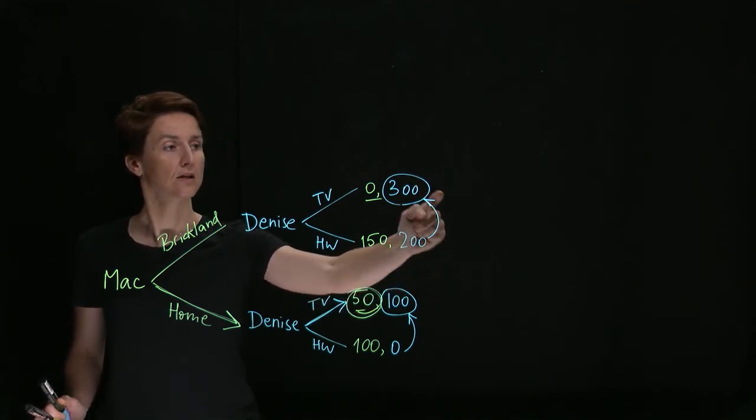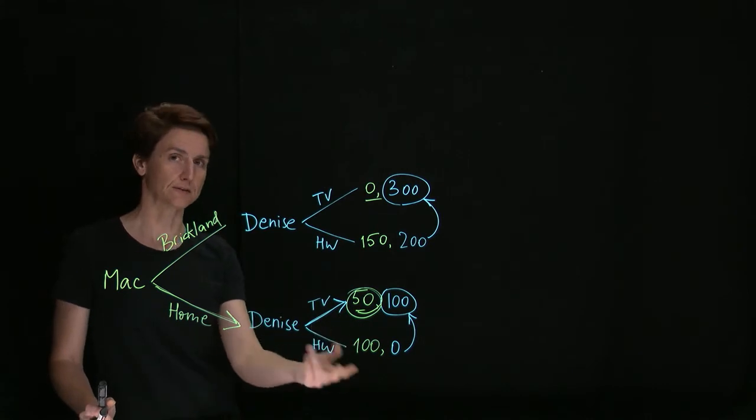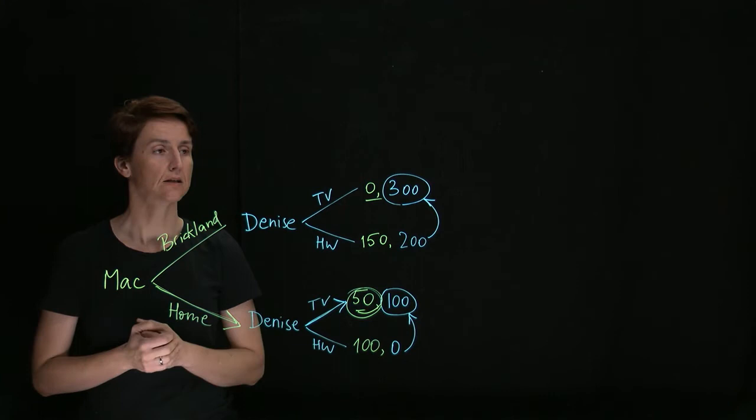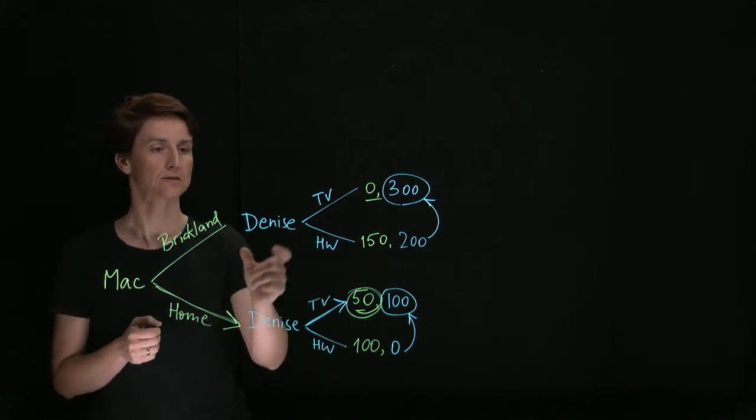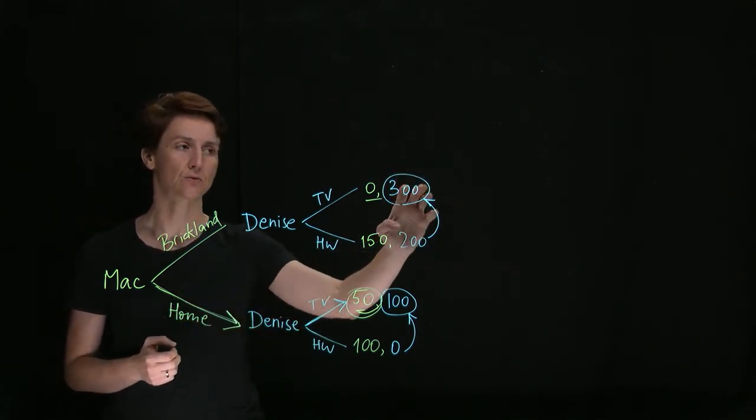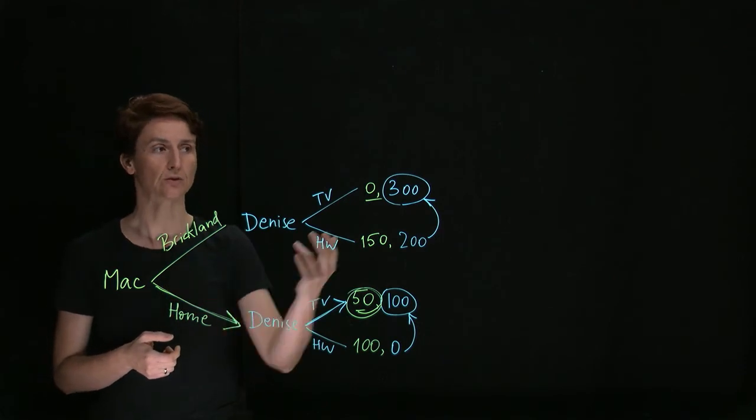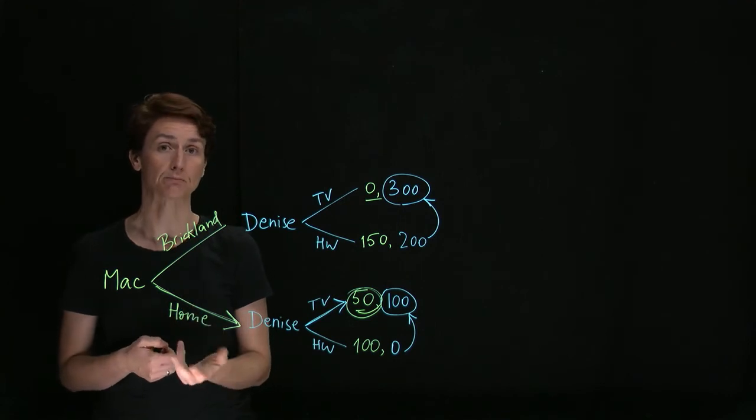Well, fundamentally, the problem is that the promise Denise is making is not credible because her incentives will be to break the promise. So if we could alter those incentives somehow, that would solve this commitment problem.